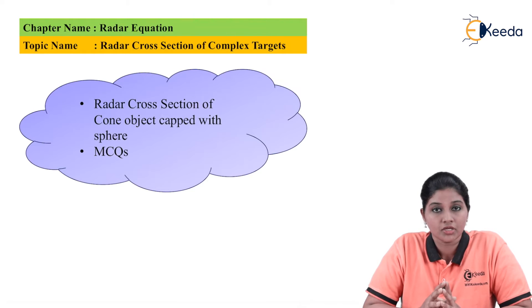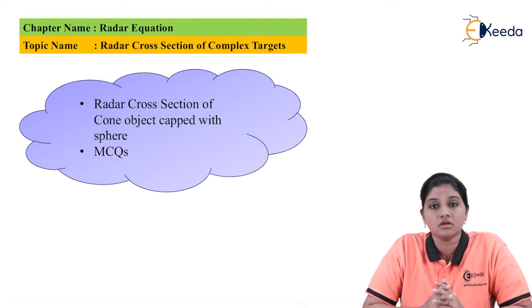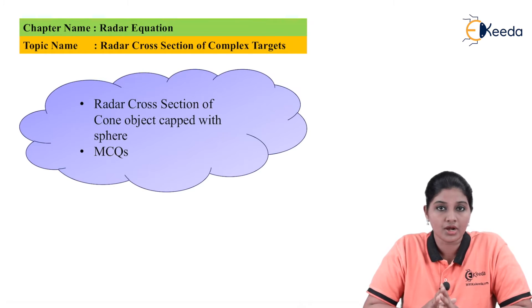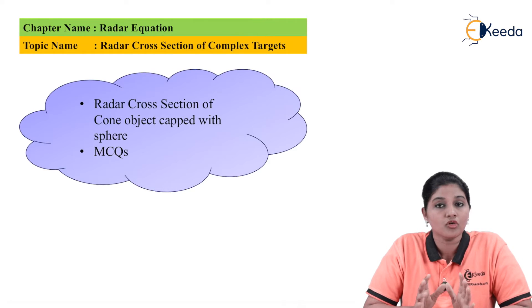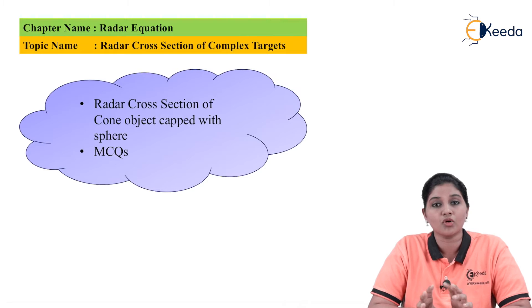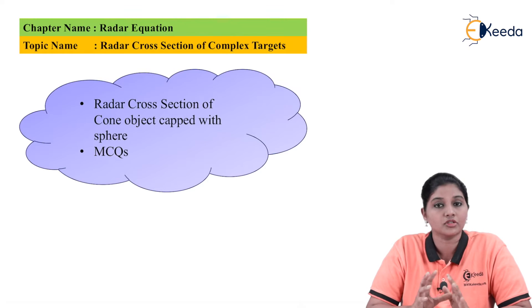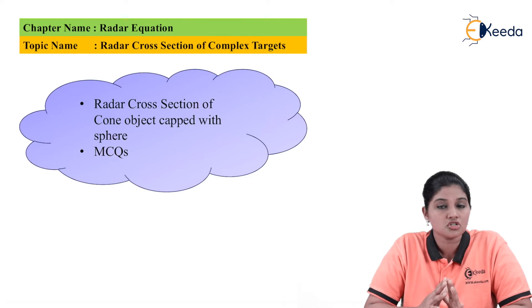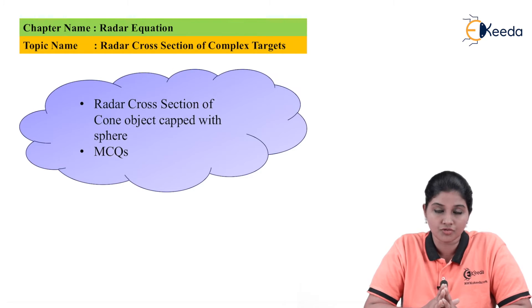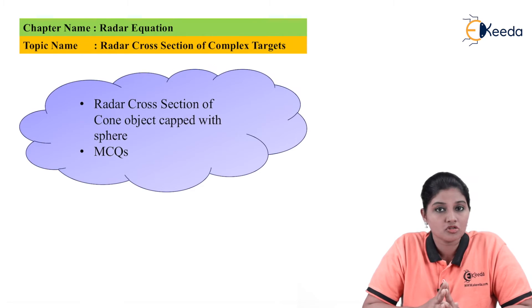With the help of this method, we can find out the RCS of a complex object. Now let's consider one example. In this example, we are going to consider two standard objects — the cone and the sphere. In order to form a complex object, we will join the cone with the sphere. For that purpose, we will halve the cone into two parts and attach the cone in such a way that the cross-section of the cone matches with the cross-section of the sphere. Then the complex object becomes a cone object capped with a sphere.